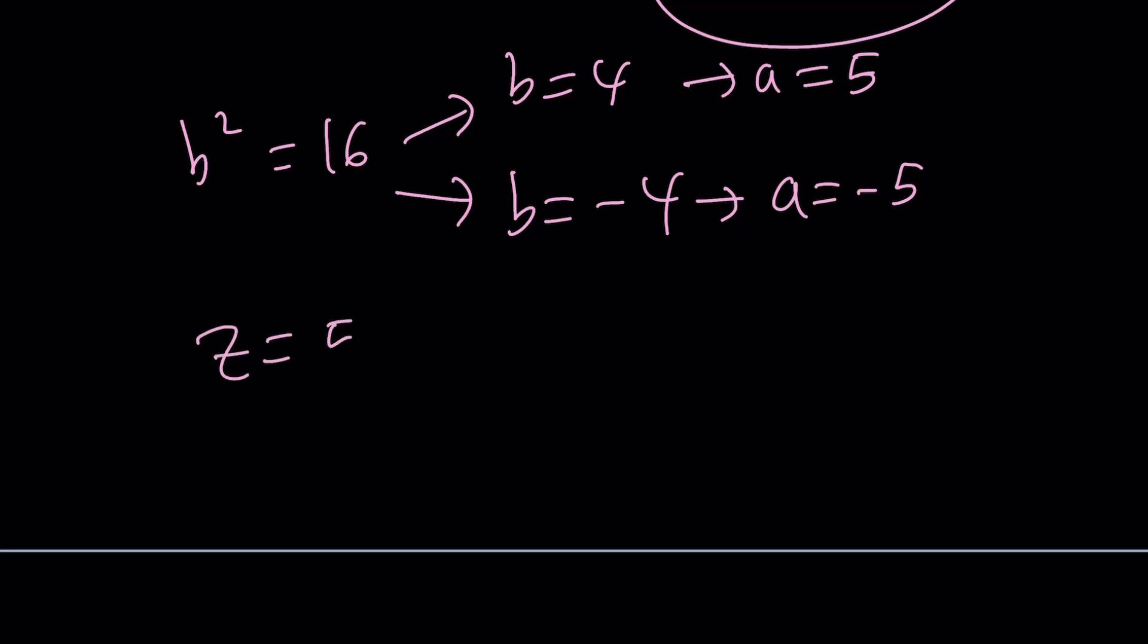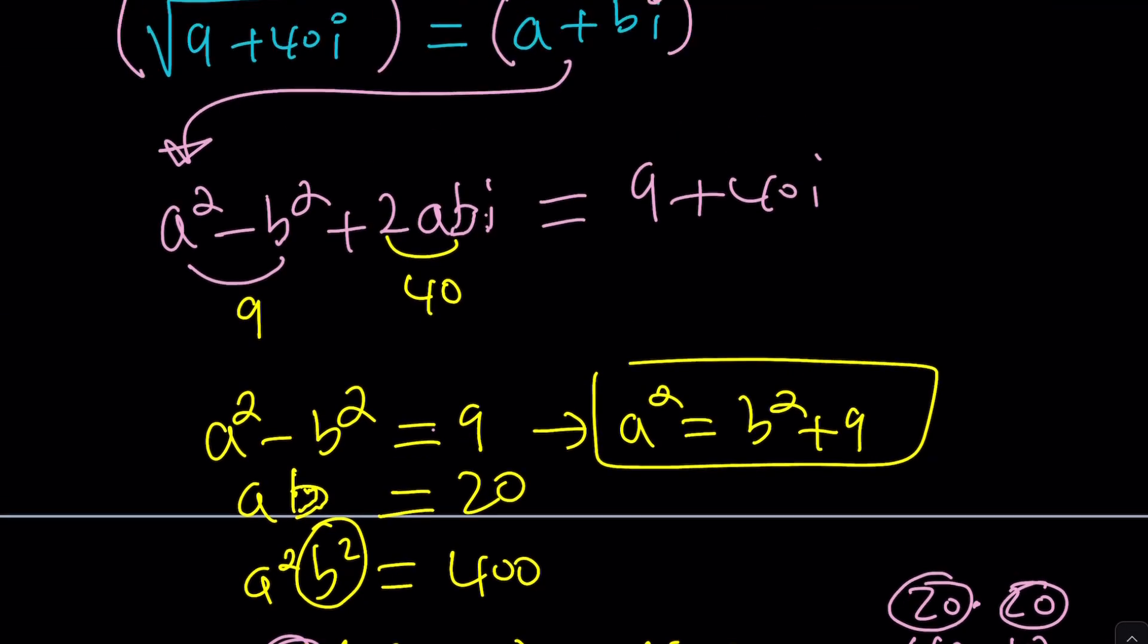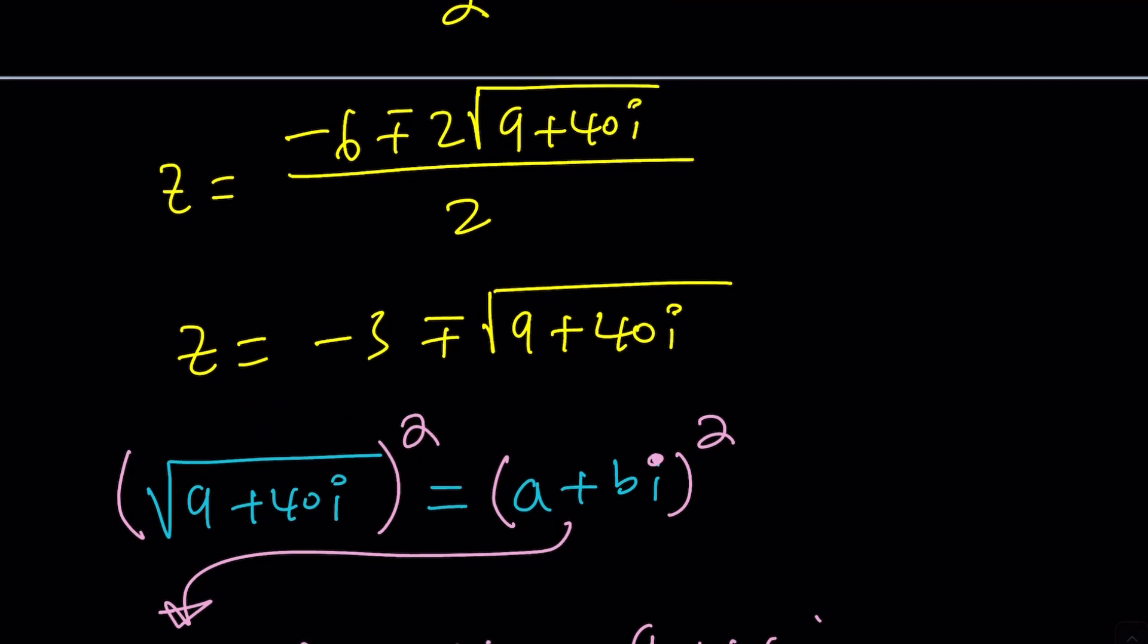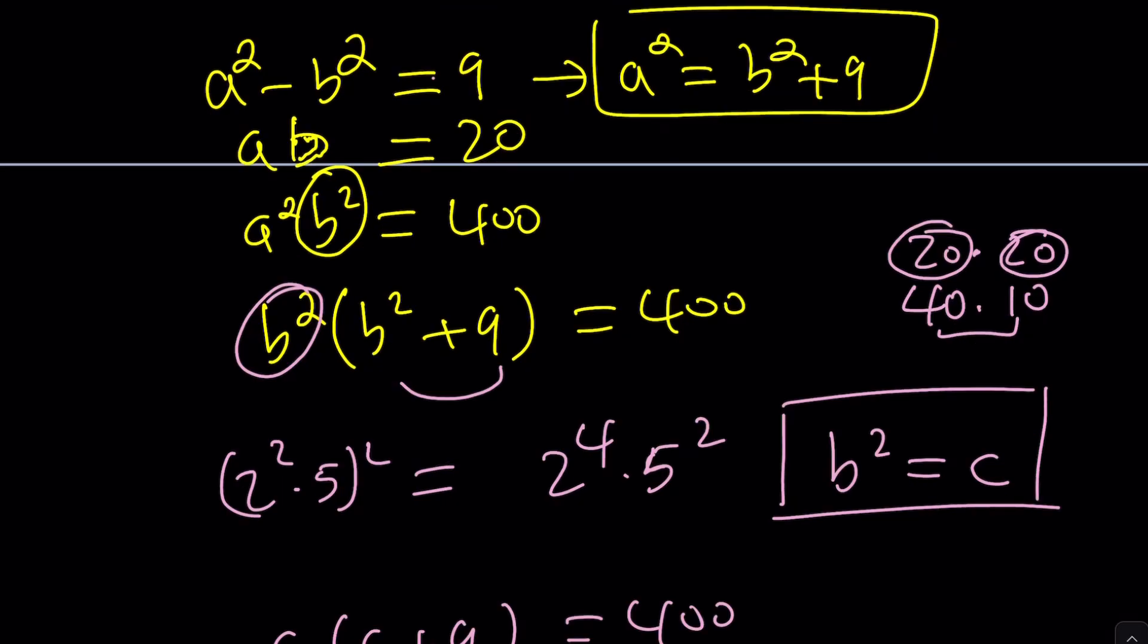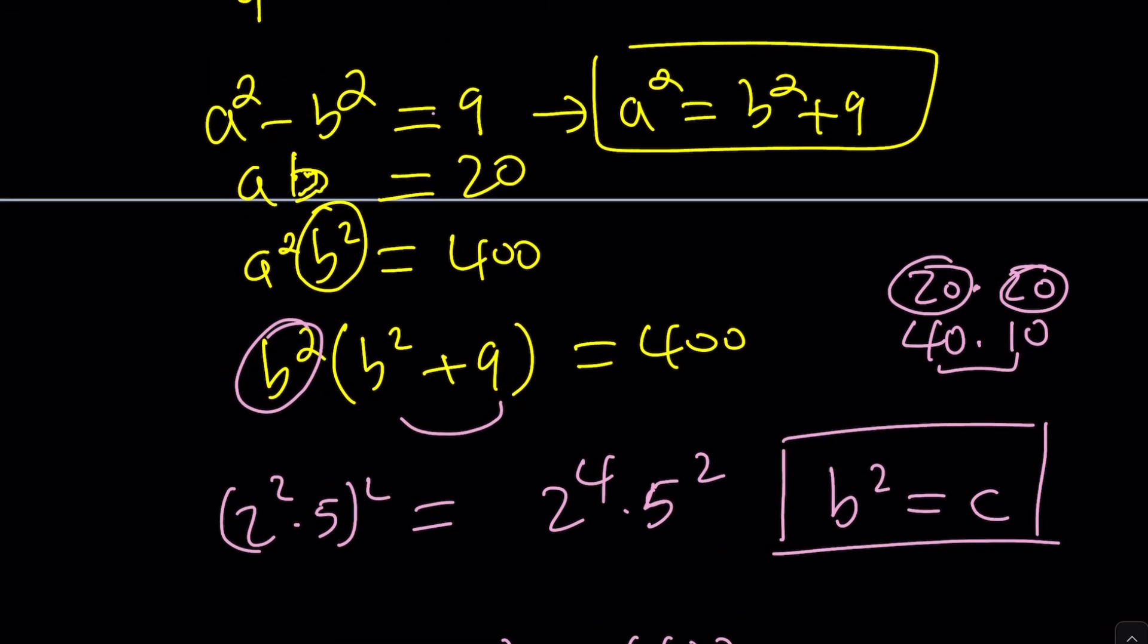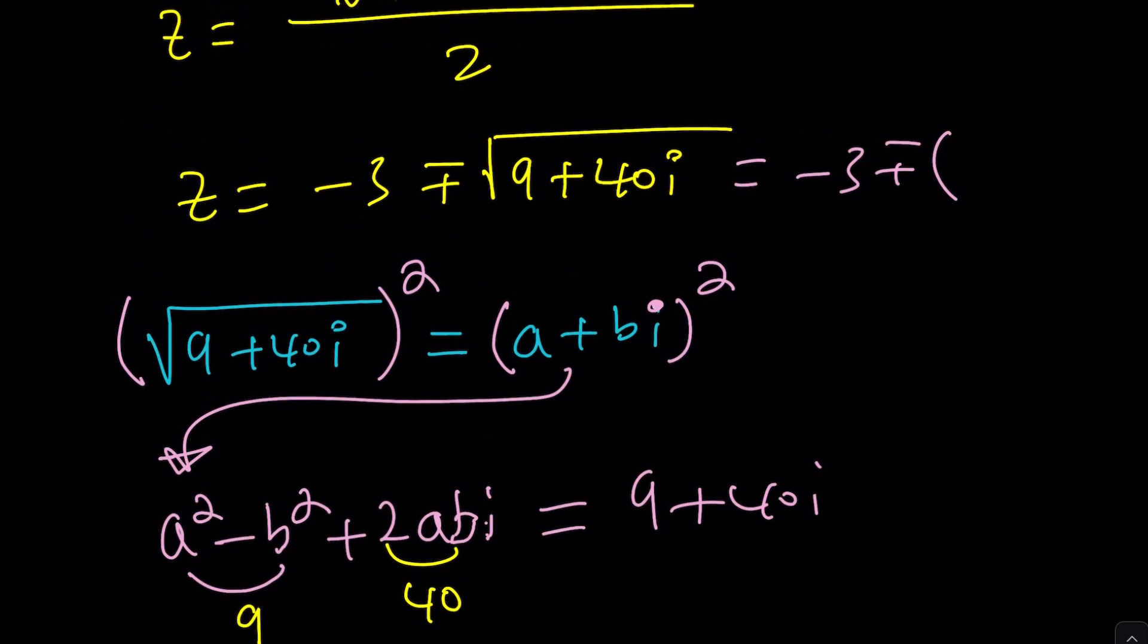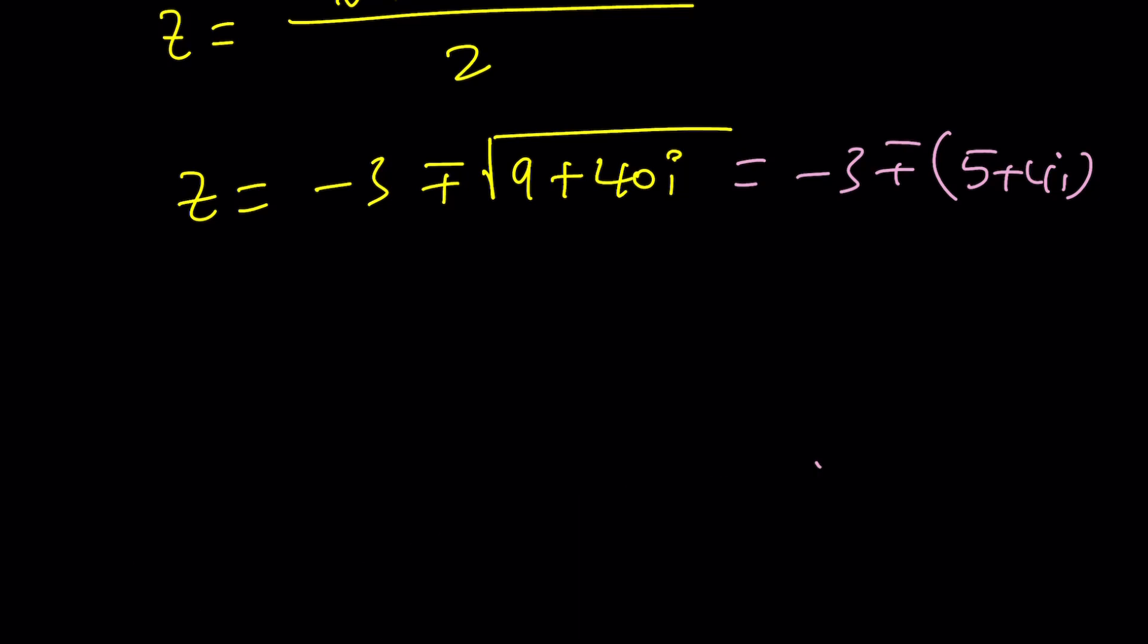Now, we should have z equals 5 plus 4i and then negative 5 minus 4i. But of course, this is just the square root of the number. So we kind of need to write the whole thing. So from here, we get negative 3 plus minus 5 plus 4i. Let's go ahead and write it down. We're going to go ahead and simplify this in two ways. Negative 3 plus 5 plus 4i, which is going to give us 2 plus 4i. That's one of the solutions for z. So let's call it z sub 1. And z sub 2 is going to be negative 3 minus 5 minus 4i. And that should be negative 8 minus 4i. So there are two solutions. Their imaginary parts are opposites. They're not conjugates. They're just that way.